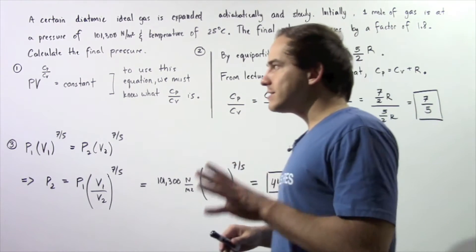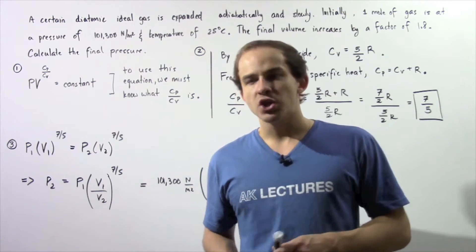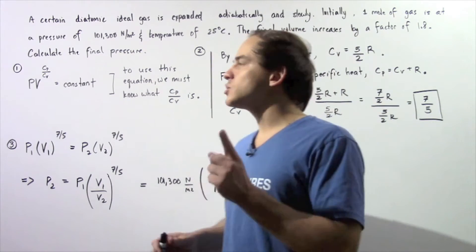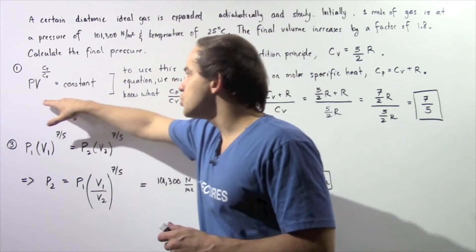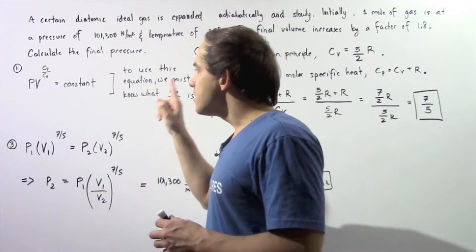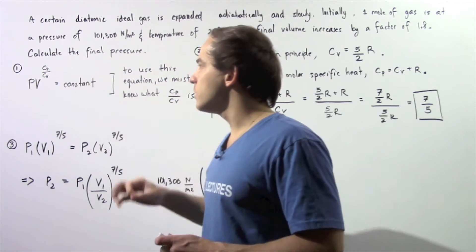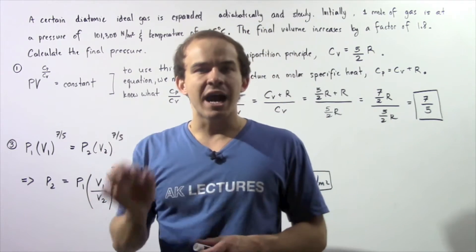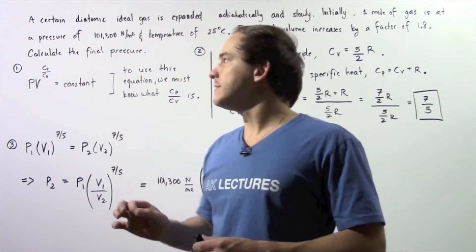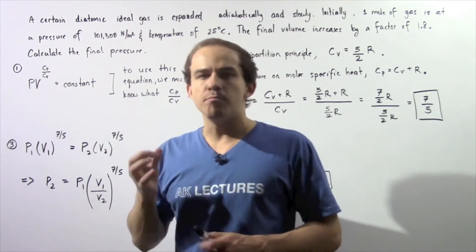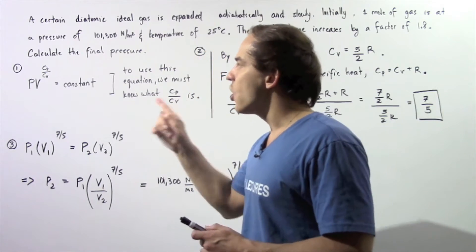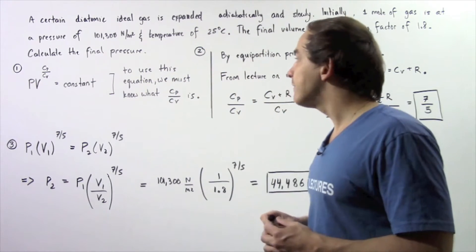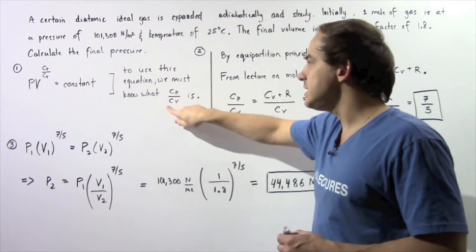In step one, we essentially have to realize what equation we have to use. Because we're dealing with a slow and adiabatic expansion of an ideal gas and we want to calculate the final pressure, we could use the following equation: the product of the pressure and the volume, where the volume is raised to the power of Cp divided by Cv, is always equal to the same constant. Now Cp is the molar specific heat when the pressure is constant, and Cv is the molar specific heat of our ideal gas when the volume is constant. So before we could actually use this equation, we have to determine what the ratio Cp to Cv is.